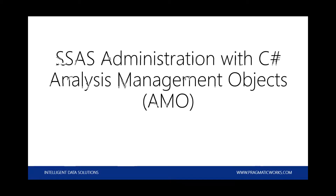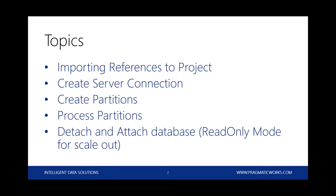We've got some people who are more familiar with C-Sharp, but also quite a few who are relatively new. So as time allows, I'm going to spend a little more time on some of the more basic C-Sharp elements as well as the actual SSAS AMO topic. What we're going to cover today: importing references to the project to access AMO, creating a server connection, creating partitions, processing those partitions, and detaching and attaching a database in read-only mode as an example for a scale-out operation. That will also give an example of how to execute XMLA on your server.